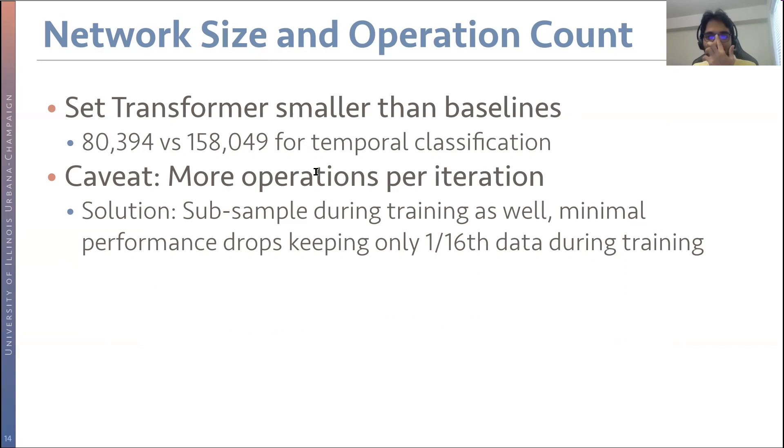A quick solution we had to this was, instead of subsampling during testing, why don't we subsample during training as well? Why don't we just feed it a fraction of the training data, and see if the network can learn to generalize just by getting the subsampled data as an input. Very interestingly, with just 1/16th of the data during training, the network is actually able to learn how to classify with a minimal drop in performance as opposed to using the entire data, which is quite cool.